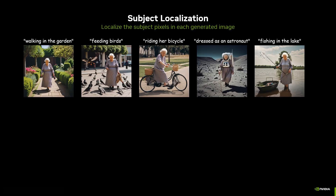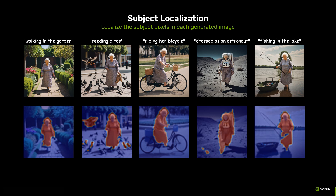Our method, Consistory, can generate a consistent set of images in seconds. First, we use the cross-attention mechanism to localize the subject in the generated images.